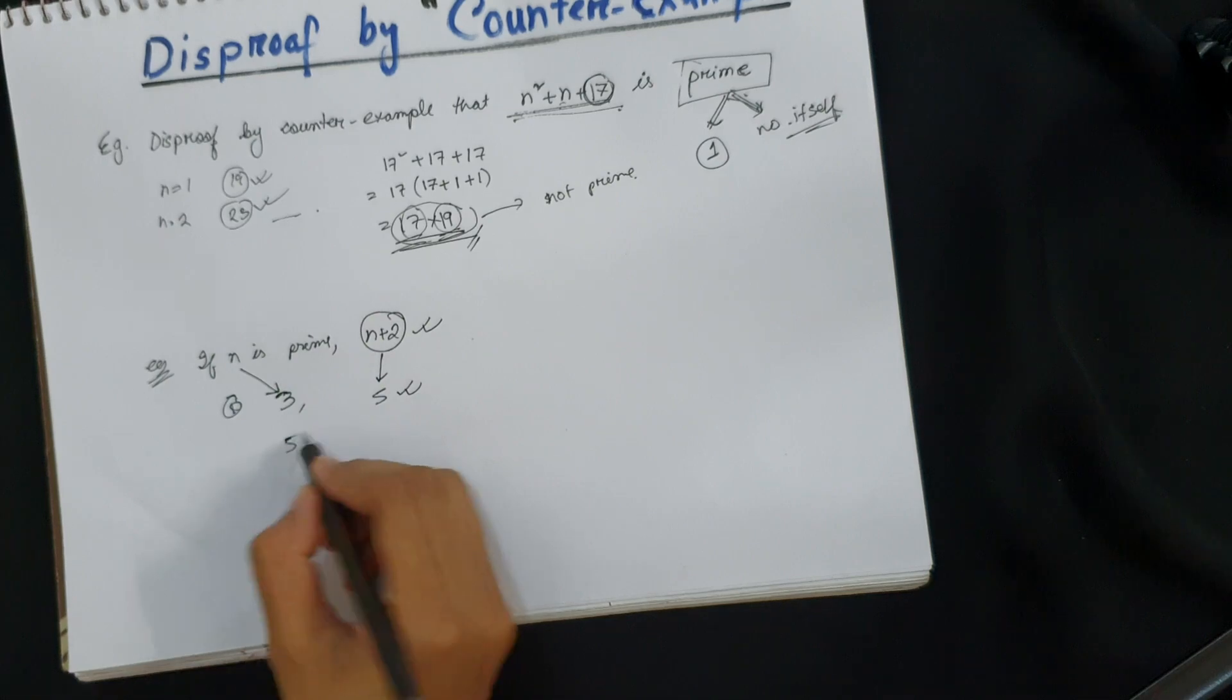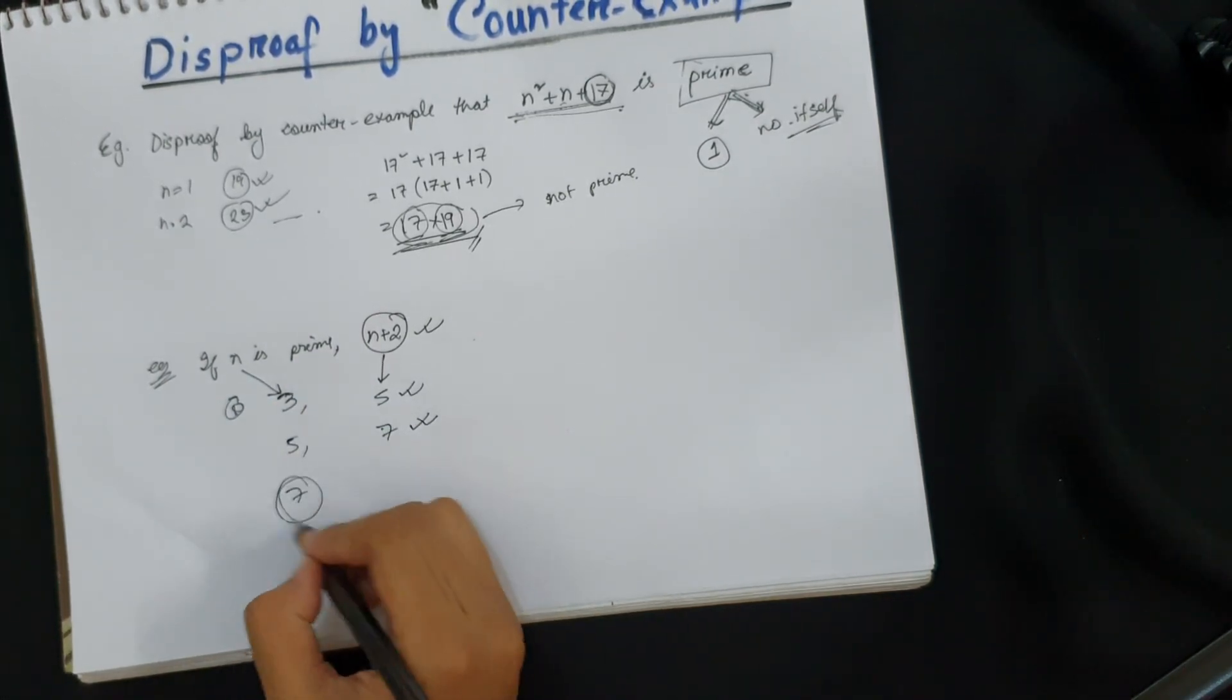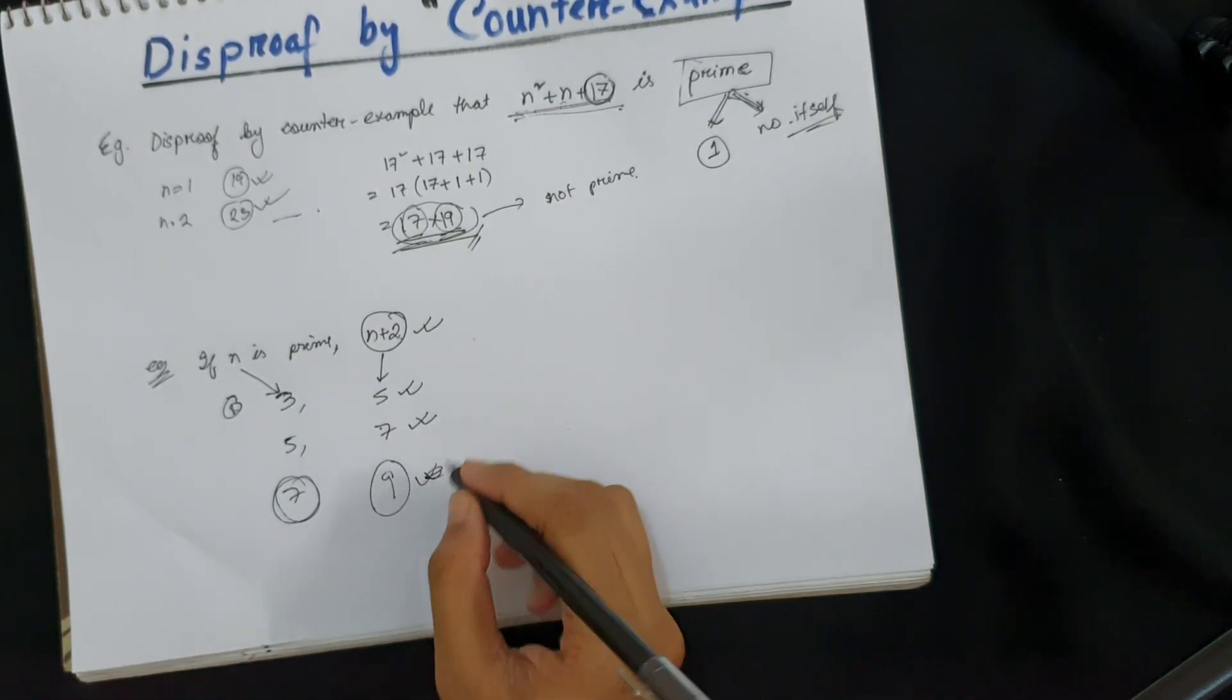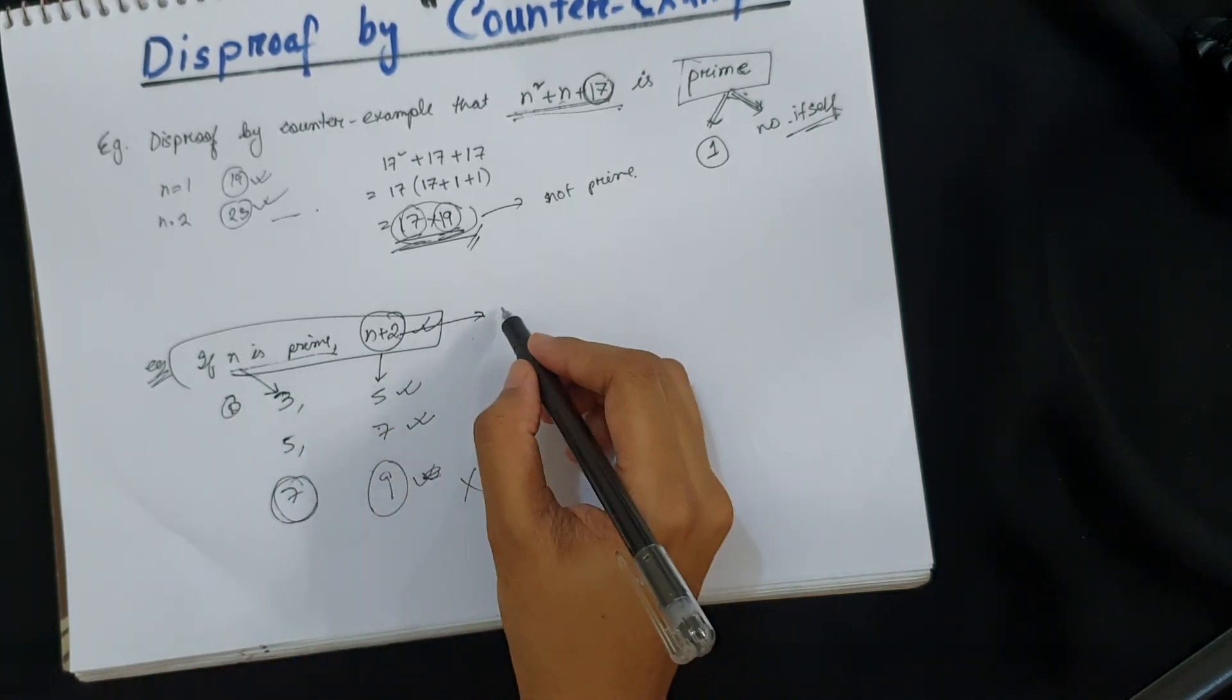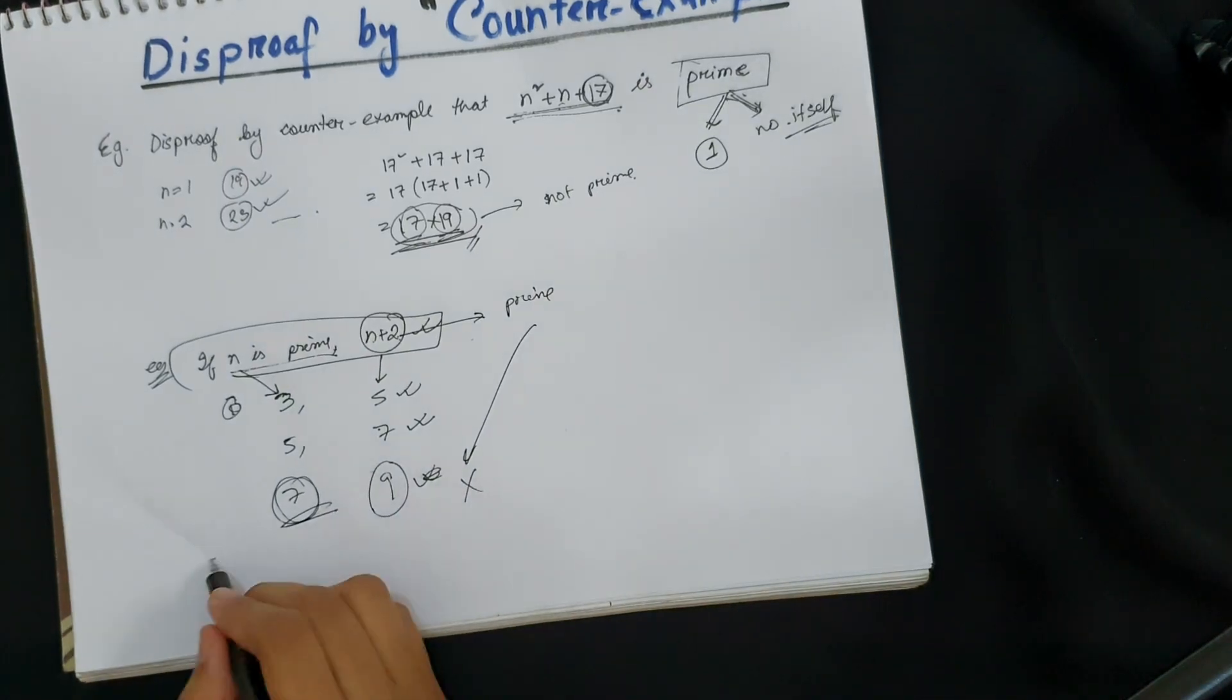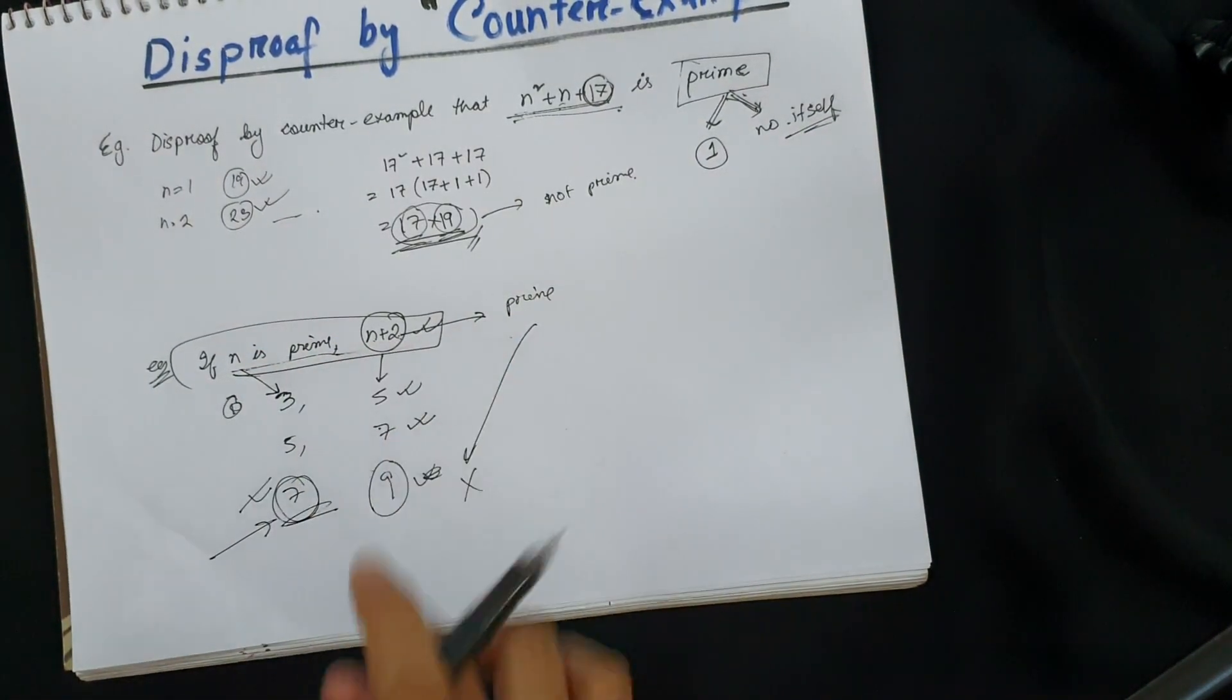Next, 5 + 2 = 7 is a prime number. But if we select 7, 7 + 2 = 9, this is not a prime number. So the statement which they said that if n is prime, n + 2 will also be prime, is not valid anymore for this case. So this is a counter-example which makes the whole statement invalid.